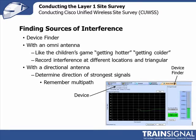The Cisco Spectrum Expert device finder works the same way. You select the device you want to track and look at the chart showing signal strength in green. As you walk around, if the signal strength gets weaker you're further away, and if it gets stronger you're getting closer to the source. I was once trying to turn off all wireless devices to do a lab exercise and keep the spectrum as clean as possible, and used the Cisco Spectrum Expert to find what was causing interference.